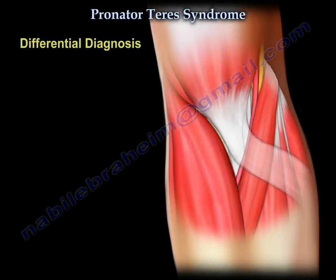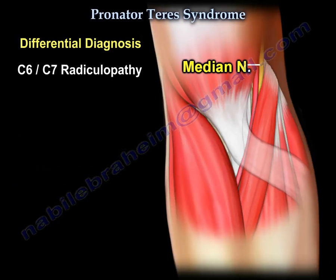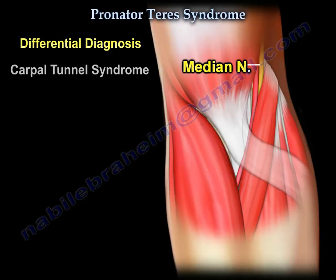Differential diagnosis includes C6 and C7 radiculopathy. Involvement of the nerves at these levels will cause numbness of the thumb, index, and long fingers, as well as weakness of the muscles of the forearm innervated by the median nerve. The radial nerve, part of C6 and C7, will show normal function of the wrist extensors and triceps. Another differential diagnosis is carpal tunnel syndrome.